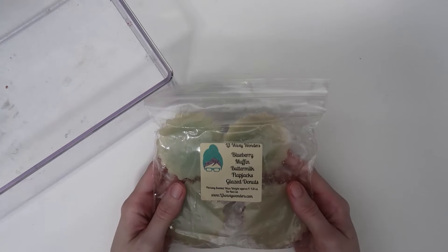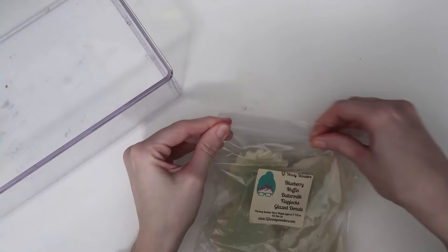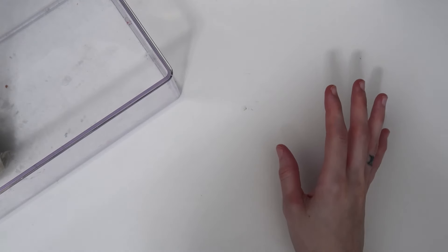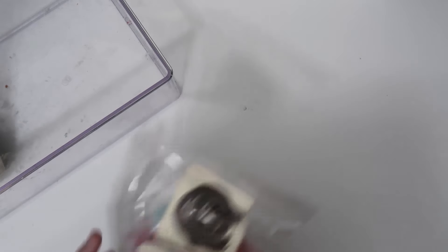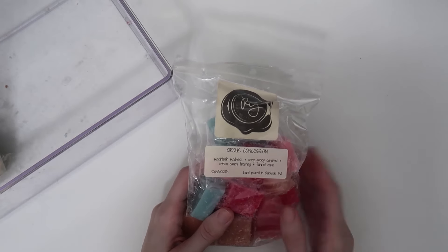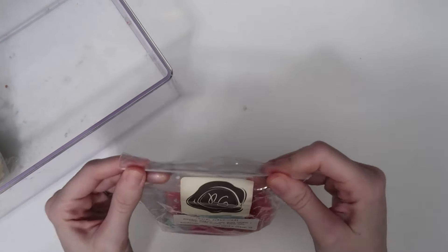I have another four pack of fluted tarts from L3 in blueberry muffin, buttermilk flapjacks, and glazed donuts. I am a sucker for a blueberry scent and that is so good. I have four bags of Rose Girls which I'm excited for because it's so easy to pop Rose Girls in throughout the house. First we have Circus Concessions which I've never melted before - Macintosh Madness, ooey gooey caramel, cotton candy frosting, and funnel cake. Mostly smells like mac apple and a little cinnamon from the funnel cake, but that smells amazing.